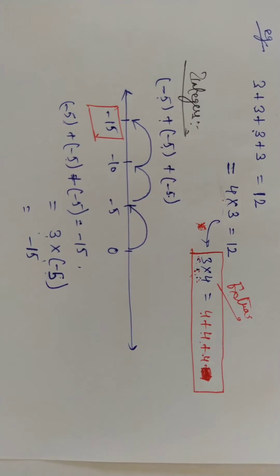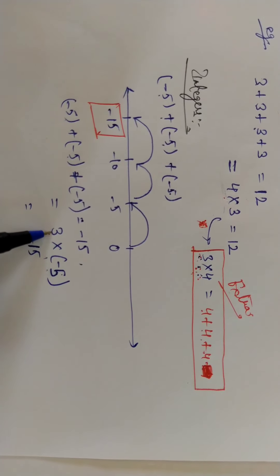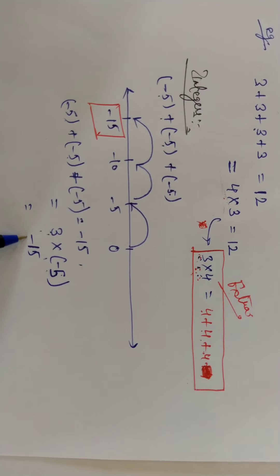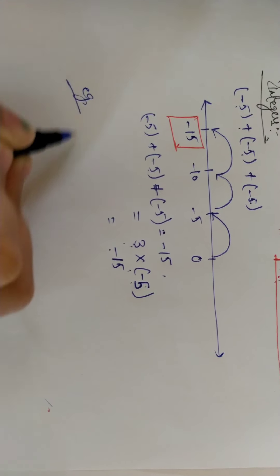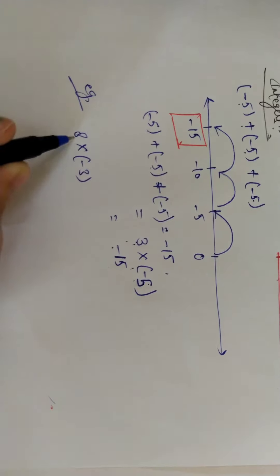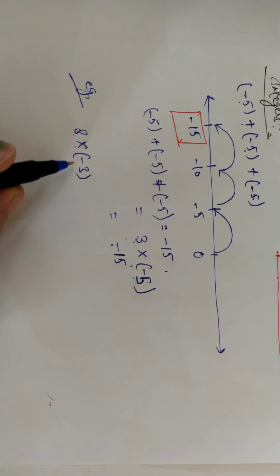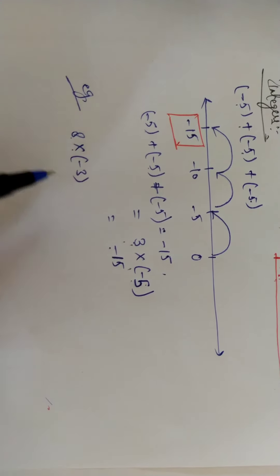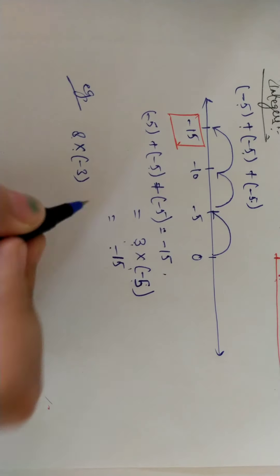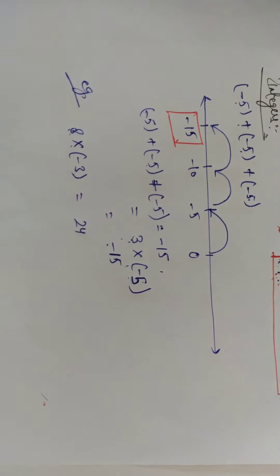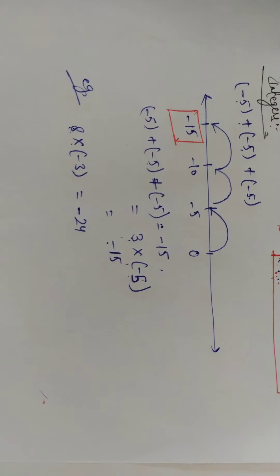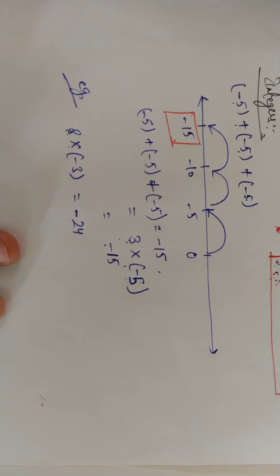It means when you get integer multiplication, you multiply the numbers and just put the negative sign in the answer. For example, 8 multiplied by minus 3 means 8 times minus 3 — you add minus 3 eight times. 8 times 3 is 24, and you just put the negative sign, so 8 times minus 3 equals minus 24.